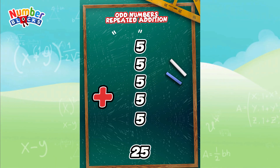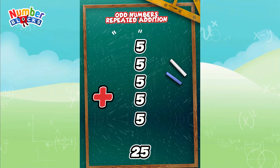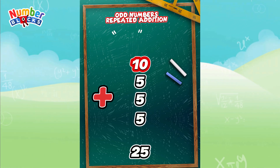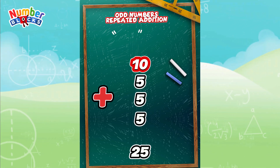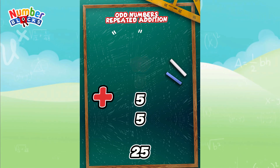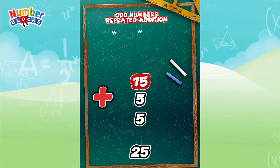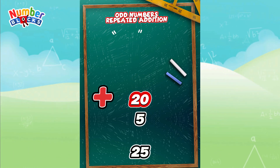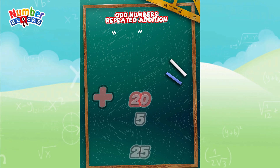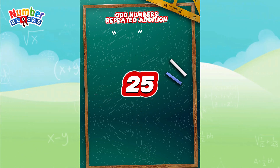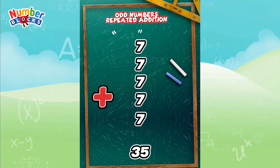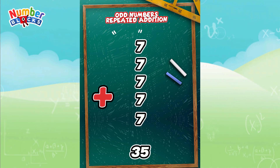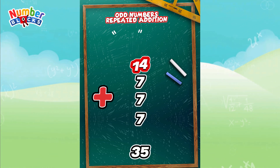Here's another one. 5 plus 5 is equals to 10. 10 plus 5 is equals to 15. 15 plus 5 is equals to 20. 20 plus 5 is equals to 25.